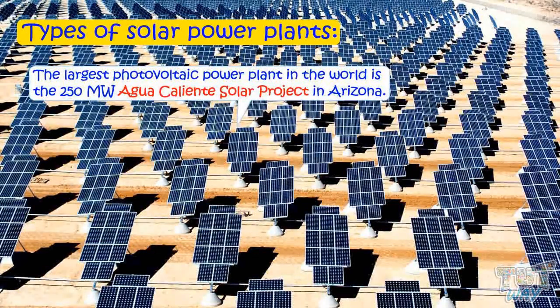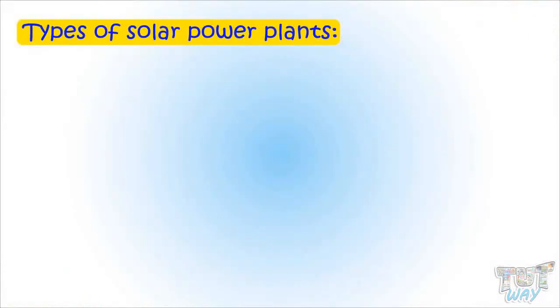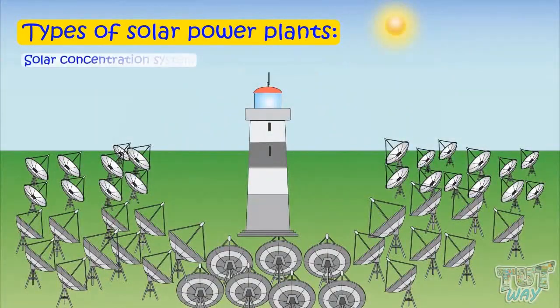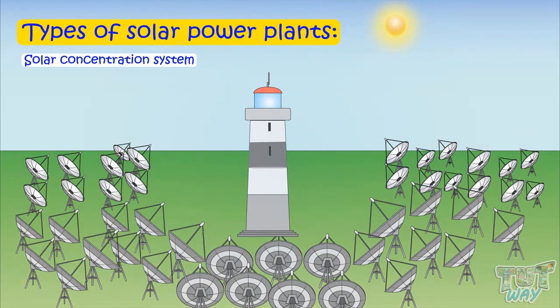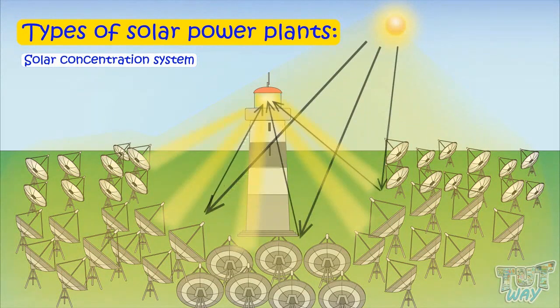There is one more type of solar power plant, and they are known as solar concentration systems. These systems use mirrors or lenses that concentrate the large amount of light falling on a large area.